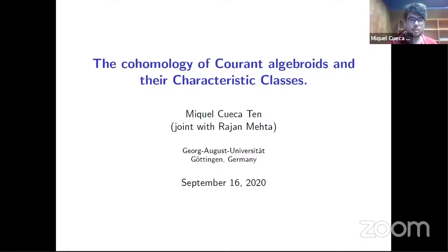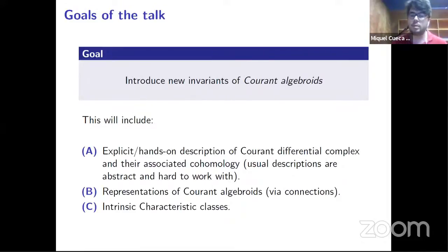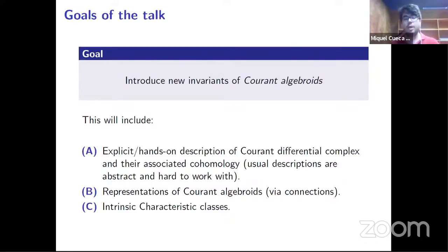This talk is about producing new invariants for current algebroids, and when I say invariant, I mean cohomological invariants. Current algebroids have an associated differential complex, and then they have an associated cohomology. But this differential complex was not so easy to work with, so we will build an explicit description of it, and that includes some Cartan calculus. Second, we will explain what representations of a current algebroid are via vector bundles with connections. Third, we will introduce new invariants that are characteristic classes in the cohomology associated to the current algebroid.